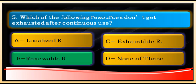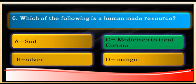Question number six: which of the following is a human-made resource? Human-made resources are those which humans have created by using their knowledge and skills, modifying natural resources. Soil, silver, and mango are all created by nature — humans play no role in forming them. The correct answer is C: a vaccine to treat COVID, which is a human-made resource.